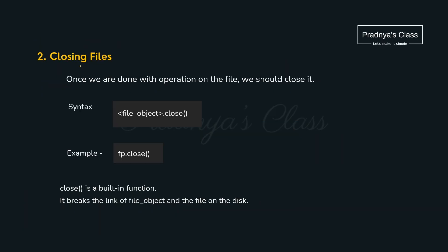Now here is the operation of closing the file. Why do we close the file? Because there will be a connection established between the disk on your computer and the program, and we need to break it to keep your data secure. For that we will be using the close function. It doesn't take any parameter and it works with the file object which gets created with the open function.